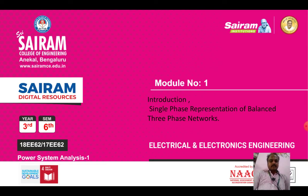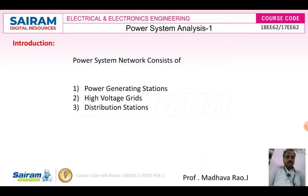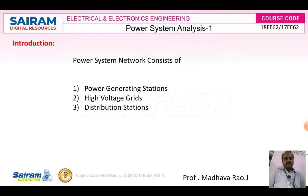First we will see the introduction part of Module 1 and single-phase representation of balanced three-phase networks. Any power system consists of the following main parts: power generating stations, high voltage grids, and distribution stations. Every power system has these three major components or divisions.